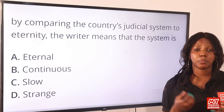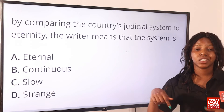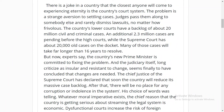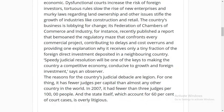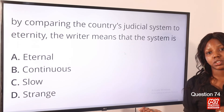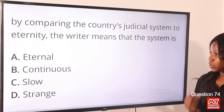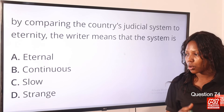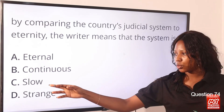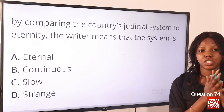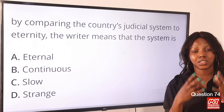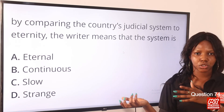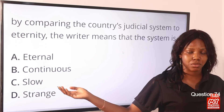Questions 74 to 76 come with another passage. Click the link in the description to get the passage on the MySchool website, or pause this video as it's displayed on screen. Question 74: By comparing the country's judicial system to eternity, the writer means the system is — option C — slow. The writer's point is that the judicial system is very slow in operating cases, often passing lawsuits to another judge. Option C is correct.